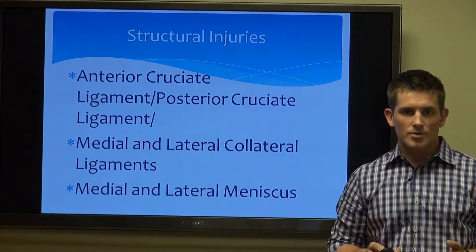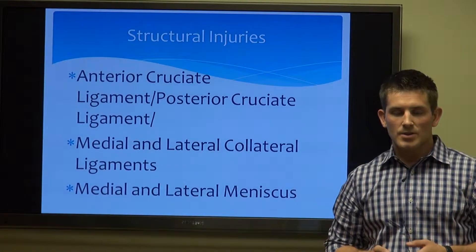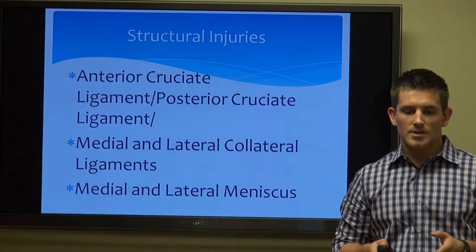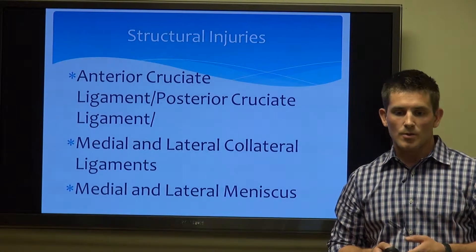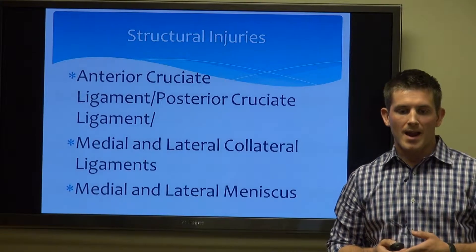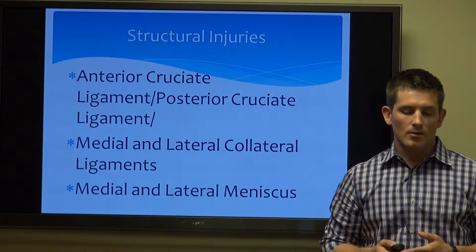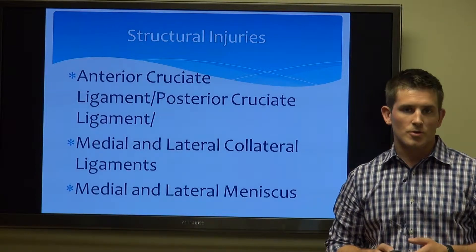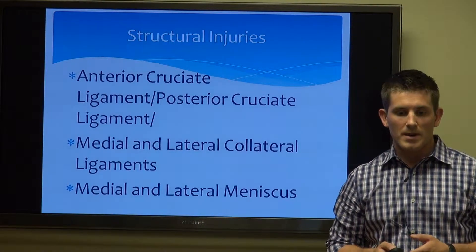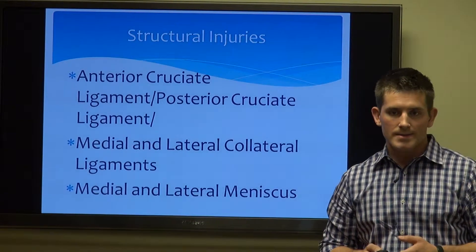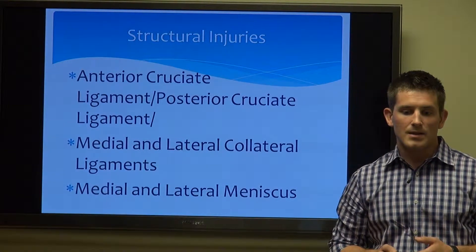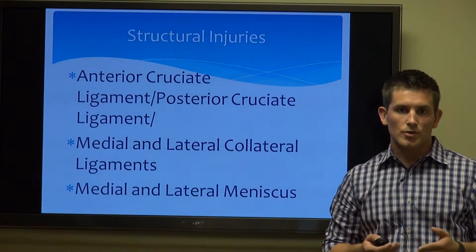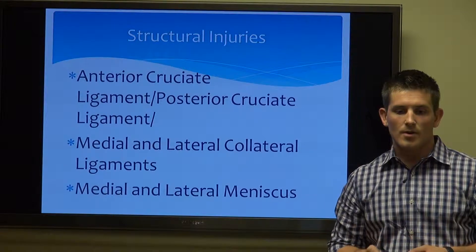Now some structural injuries. When we talk about structure, we're looking at the anatomy through the hips, knee, and ankles. You can have an anterior or ACL ligament, or a posterior cruciate or PCL ligament — rupture, sprain, or tear. You can have the medial and lateral collateral ligaments — again, a rupture, sprain, or tear. And you can have the medial and lateral meniscus, usually either a strain or a tear.